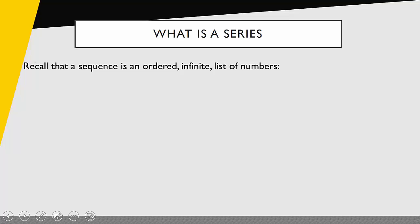So what is a series? Let's start by reviewing what a sequence is. A sequence is an ordered infinite list of numbers. As an example I have 1, 1/4, 1/9, 1/16, 1/25, and so on and so forth. That's an example of a sequence, and I could use the notation with curly brackets and then define my sequence as a sub n.